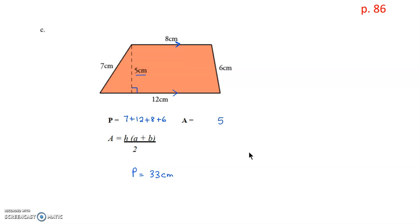So we're going to take 5 times 12 plus 8, all divided by 2. So that equals 5 times 20, divided by 2, which is 100, divided by 2. So the area of this trapezoid is 50 square centimeters.